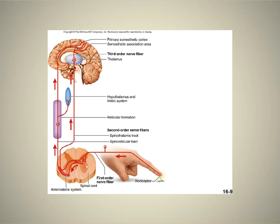It goes into the spinal cord and synapses upon the cell bodies of the second order neurons. The second order neurons decussate in the spinal cord and ascend up to the brain. There are two pathways. The usual pathway goes from the second order neuron to the thalamus. Then the third order neurons — almost all third order neurons in every sense have their cell bodies in the thalamus. The second order synapses upon the third order in the thalamus, and those third order fibers go to the primary somaesthetic cortex where you actually feel the sensation of pain.